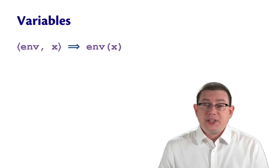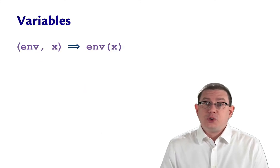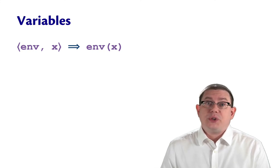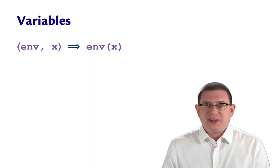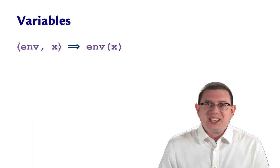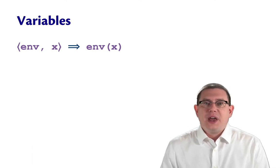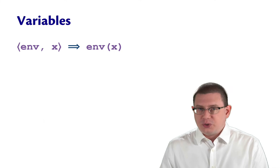We can now give the dynamic semantics of a language using this big step environment model relation. We'll start with the language simple. So in simple we have variables. We can just look up a variable in the environment. This is the lazy substitution occurring. So whenever you go to evaluate a variable name, just look it up.